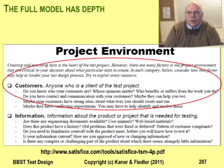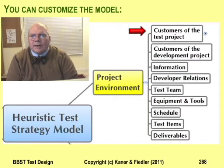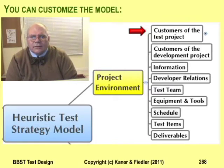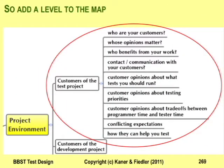This slide shows part of the test strategy model's project environment page. Here you can see two of the subcategories of project environment: customers and information. You can also see sub-subcategories — for example, who your customers are is a subcategory of customers, and how well you communicate with your customers is a different subcategory. This slide shows part of my own map for the test strategy model. I've added all the subcategories to project environment and all the sub-subcategories. The little plus sign beside subcategories means there's another level of detail. If you click on a plus, the program expands the map to show those subcategories. You can add as many levels and as much detail as you want, giving plenty of space and structure to fill in details from the spec.